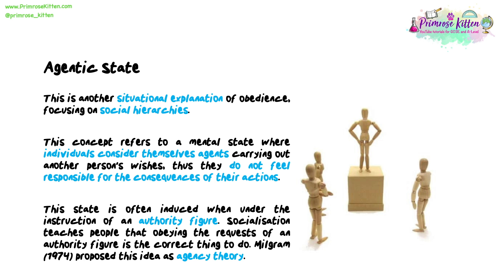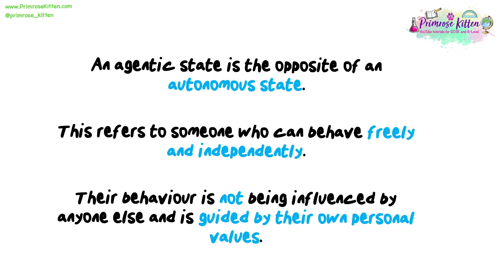Milgram, 1974, proposed this idea as agency theory. An agentic state is the opposite of an autonomous state. This refers to someone who can behave freely and independently — their behaviour is not being influenced by anyone else and is guided by their own personal values.